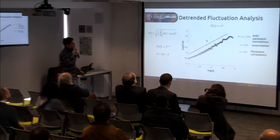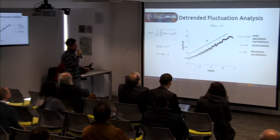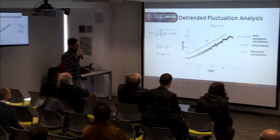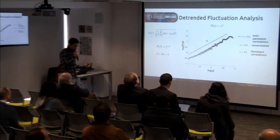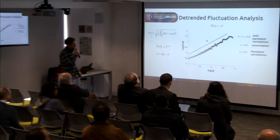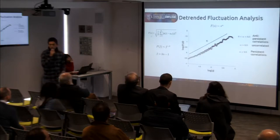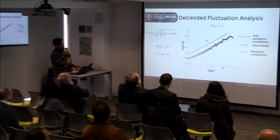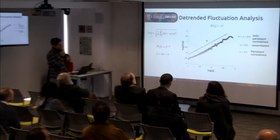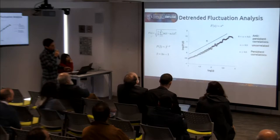So if alpha is bigger than 0.5, it's persistent correlations. And if alpha gets higher, then our correlations are stronger. Alpha equals 0.5 is uncorrelated noise, it's white noise. And this is very weird case, the detrended fluctuation analysis. But there are also, you can also detect anti-persistent correlations.